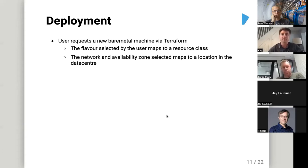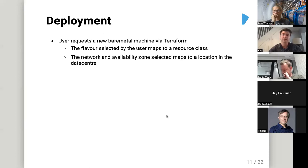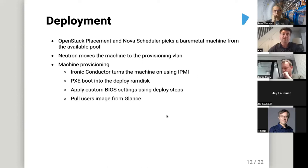The resource class represents a type of server — for example, a GPU server of a specific type — represented as a flavor the customer has access to. Because we have a large estate, you don't want the machine placed in a random rack, so you specify an availability zone and network, which tells the scheduler exactly where it needs to be placed. The placement service then picks a node from the available pool and Neutron moves it to the provisioning VLAN.